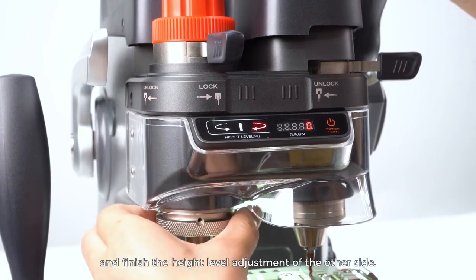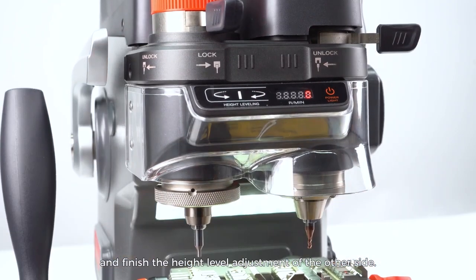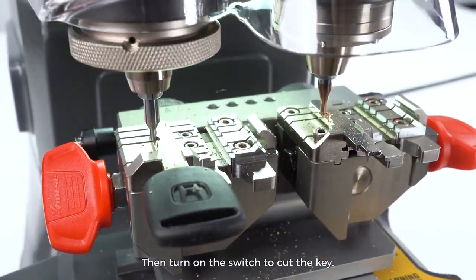Similarly, align the key and finish the height level adjustment of the other side. Then turn on the switch to cut the key.